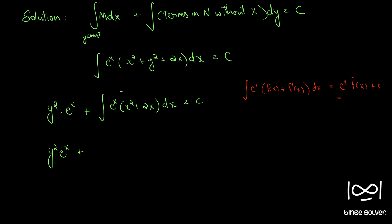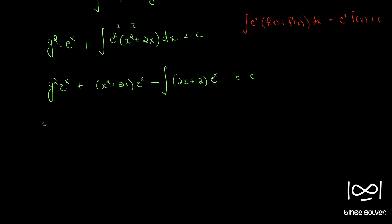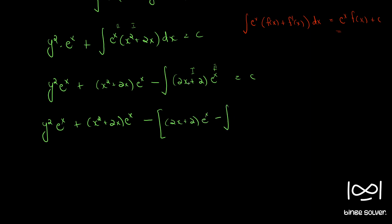Applying integration by parts: first function is x squared plus 2x, second is e^x. So we get (x squared plus 2x) e^x minus the integral of (2x plus 2) e^x. Applying by parts again: y squared e^x plus (x squared plus 2x) e^x minus [(2x plus 2) e^x minus integral of 2 e^x], which gives 2e^x, equal to c.